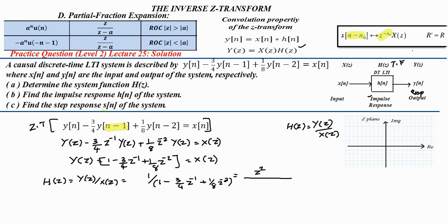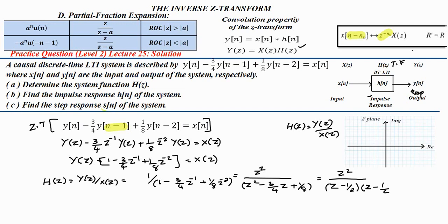After multiplying by z^2, H(z) becomes z^2 divided by [z^2 minus 3/4 z plus 1/8]. Factorizing the denominator gives H(z) equals z^2 divided by [(z minus 1/2)(z minus 1/4)]. This is the transfer function H(z) of the system, given by Y(z)/X(z).